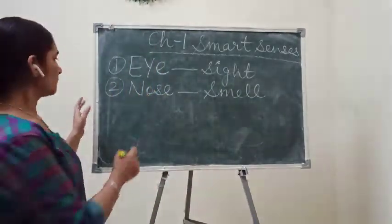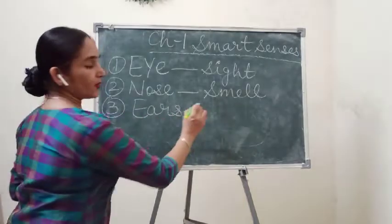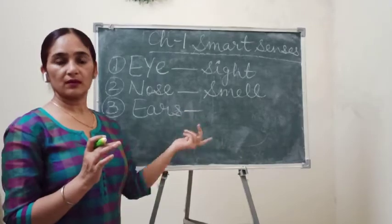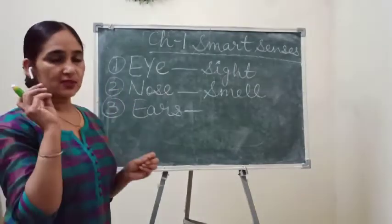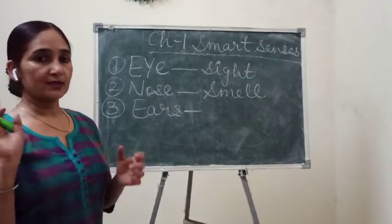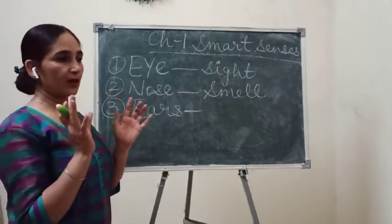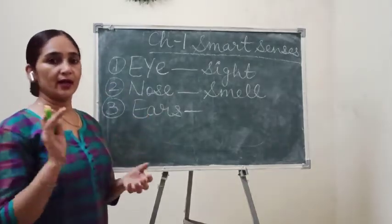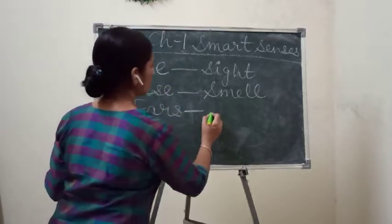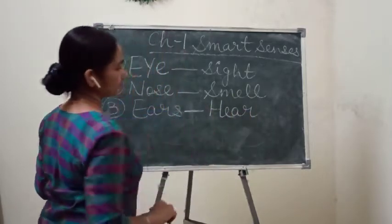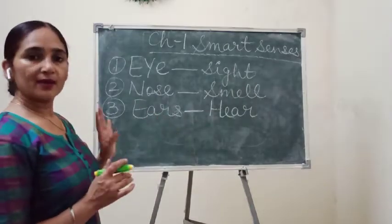Our sense organ is nose and the sense is called smell. The third sense organ is ears. With the help of our ears we can hear many things. Even a very small sound coming from anywhere — we can easily identify that something is happening around us, even if someone is approaching from behind. Ears help us to hear, so hearing is a sense and ears are the sense organs.